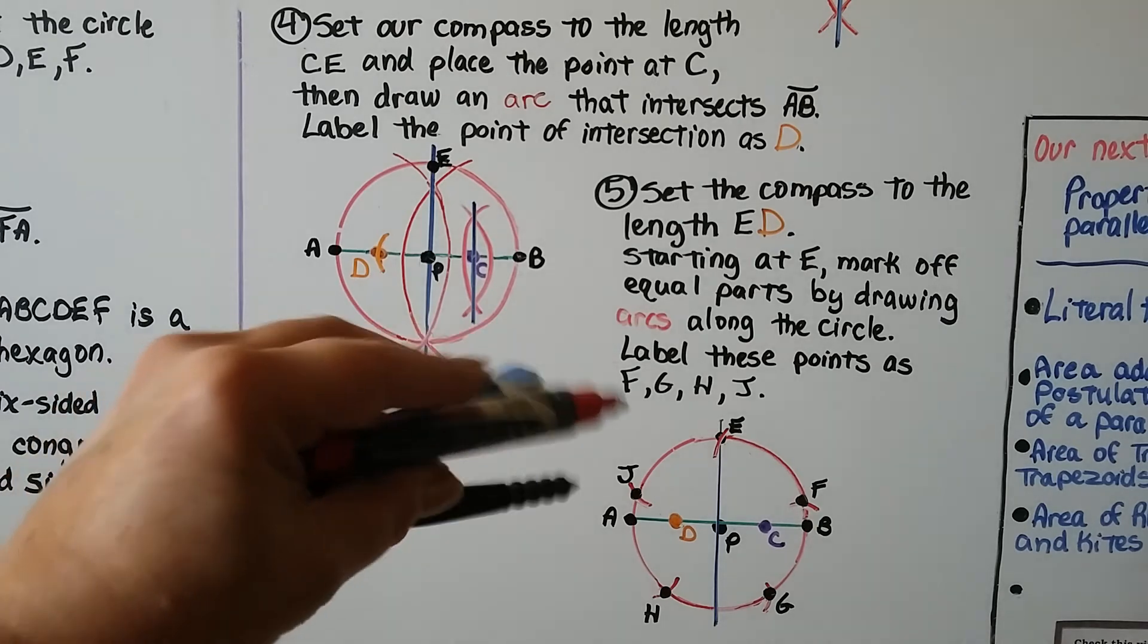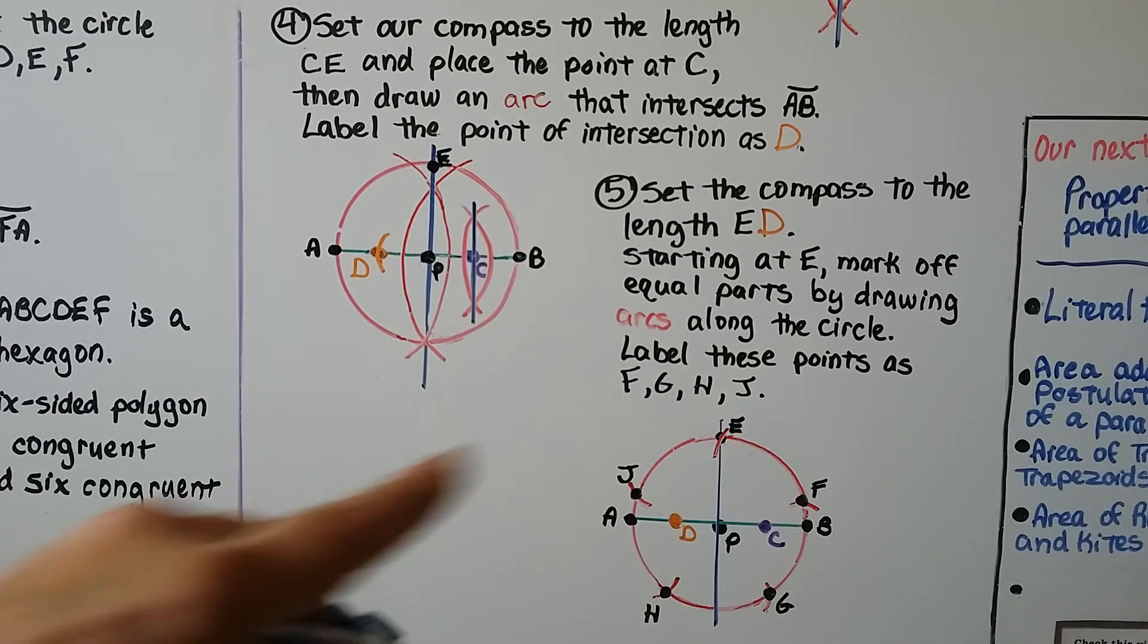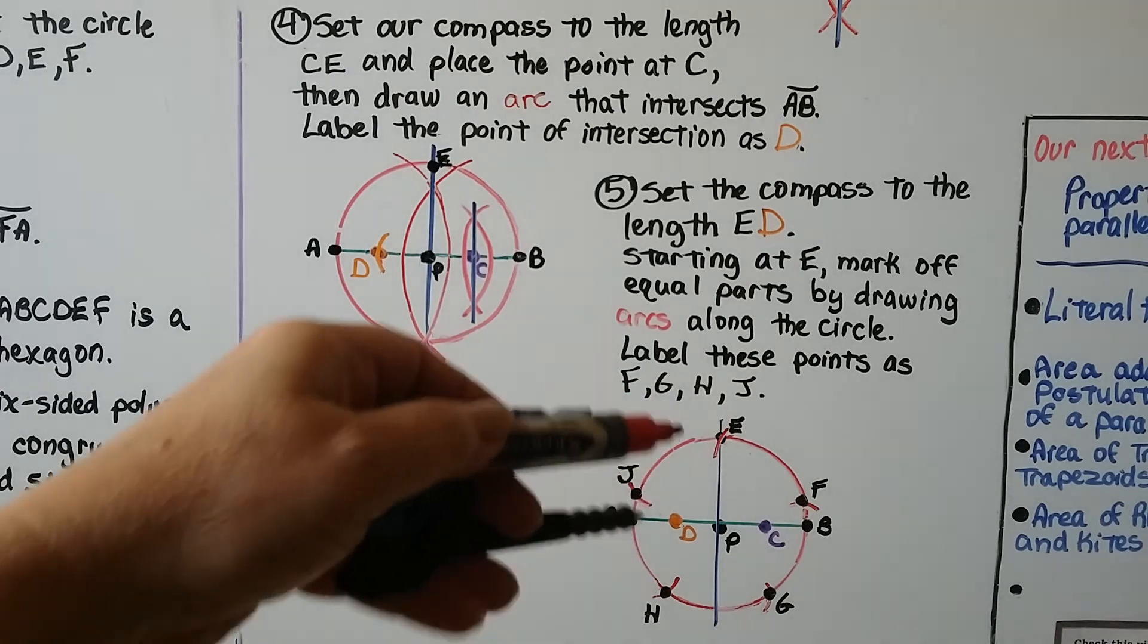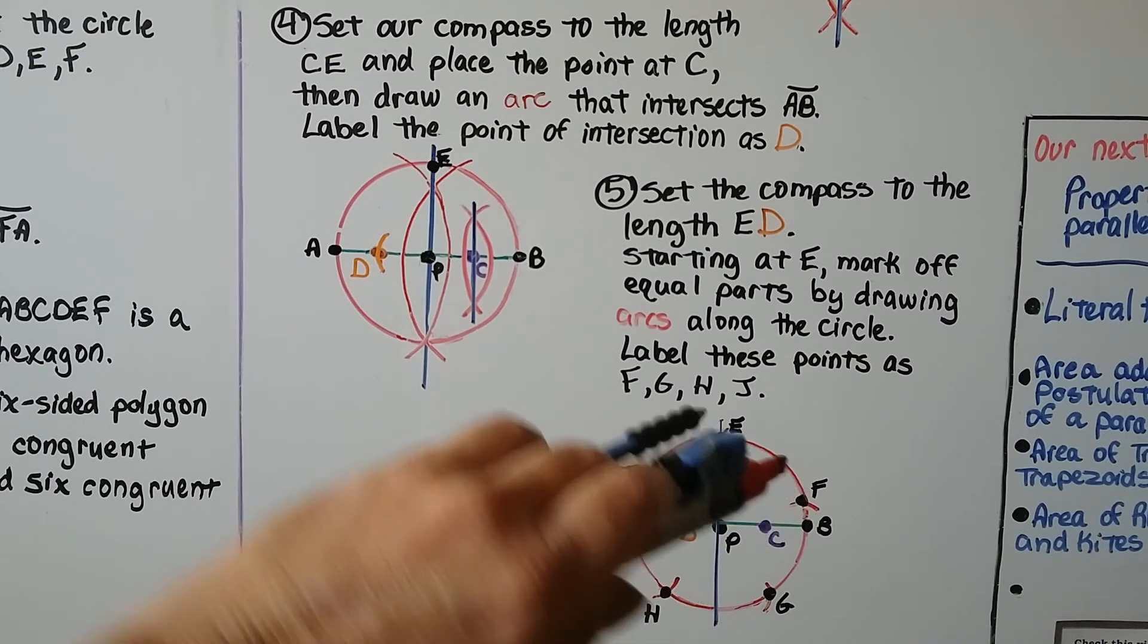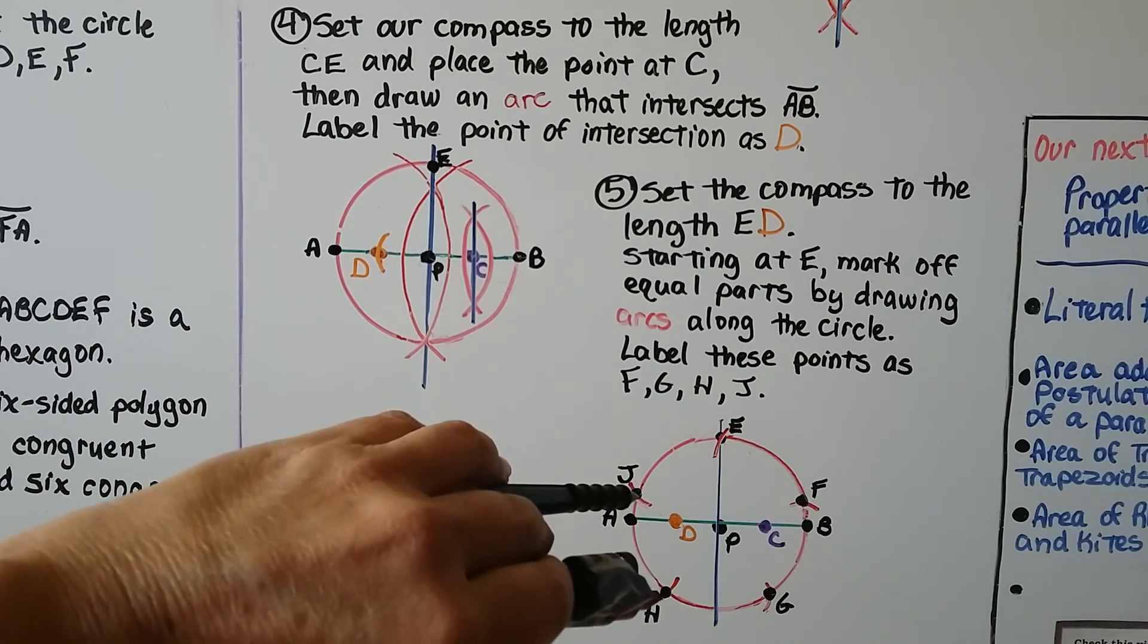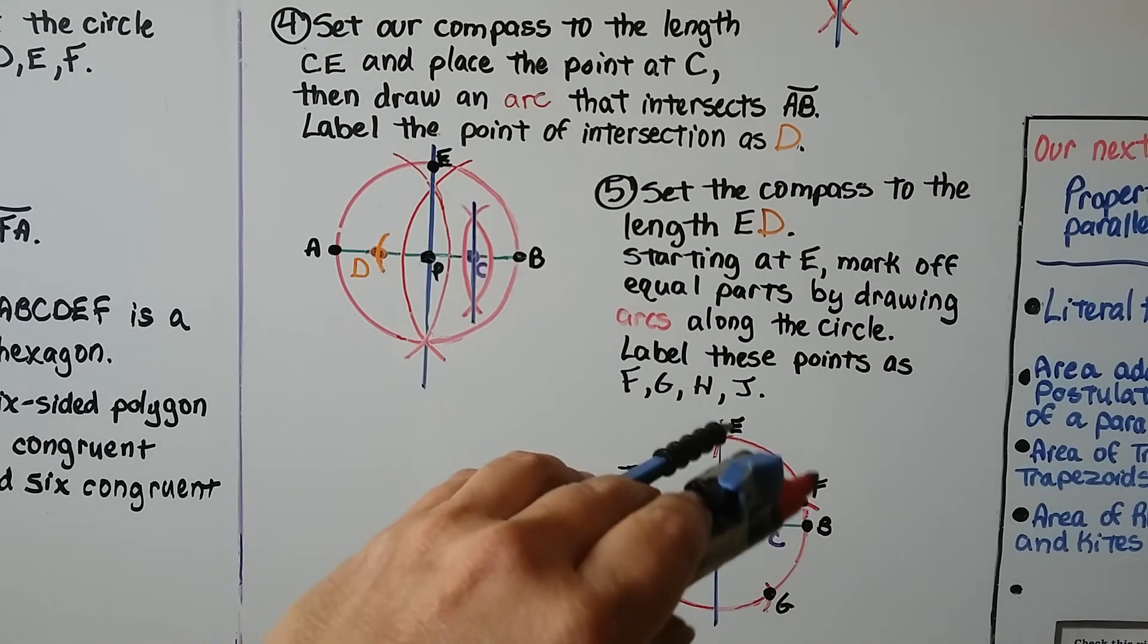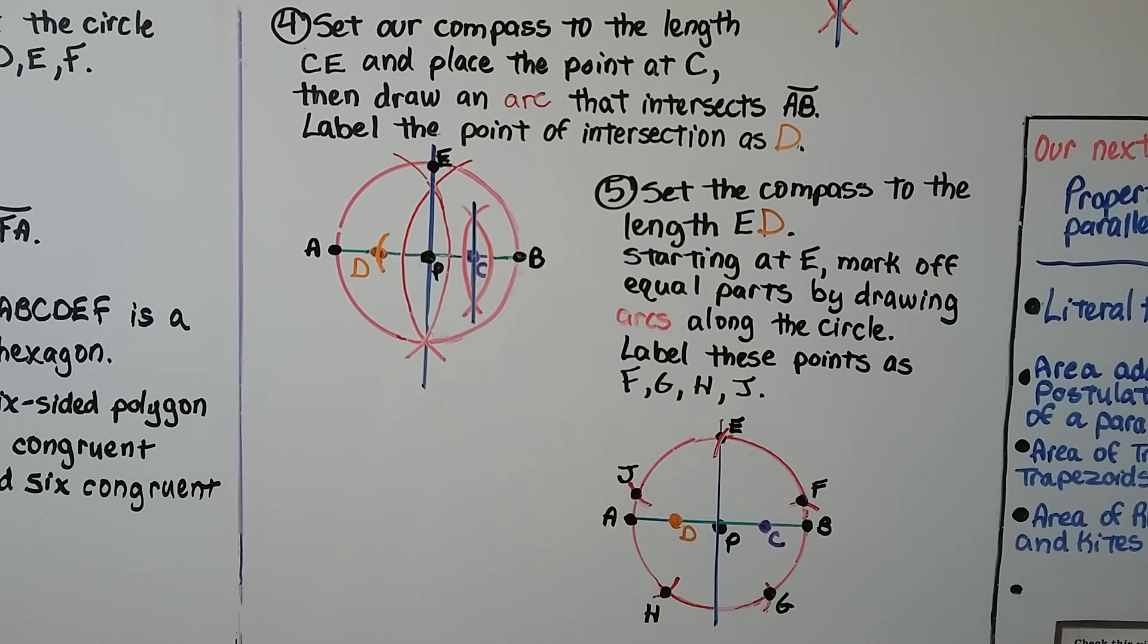Now we set the compass to the length ED, this length, and starting at E, we mark off equal parts. So it's this length, and we put our point on E and make an arc. We put it on this point and make an arc, put it on this one and make an arc, put it on this one and make an arc. We also could have started on this side and made an arc and then started going around clockwise. We can label the points as F, G, H, and J.